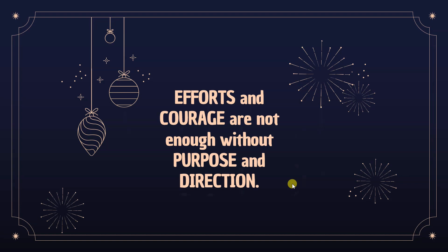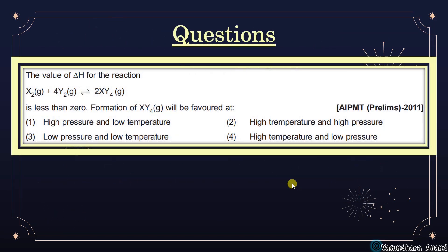Let's start with the homework solution from the previous video. The reaction is: X2(g) + 4Y2(g) → 2XY(g), and ΔH < 0, meaning it is an exothermic reaction. For exothermic reactions, low temperature is the favorable condition. On the volume side: reactants have 1+4 = 5 volumes and products have 2 volumes, so volume decreases, meaning pressure increases in the forward direction. Therefore, high pressure and low temperature are the favorable conditions.